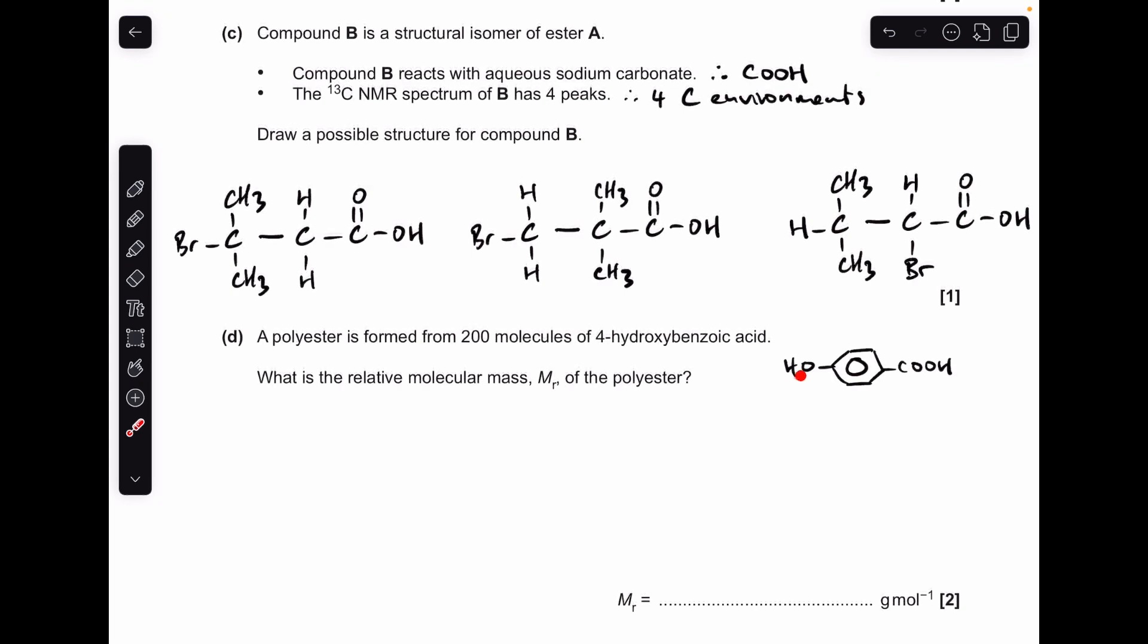Moving on to part D, I've just drawn up the structure for 4-hydroxybenzoic acid, just to quickly explain how this polymer is going to form. We're going to take the H off the OH group, and we're going to take the OH off the carboxylic acid group, which means we can then add multiple copies of these to each other. We're told we're going to form a polyester that contains 200 of these. Now the thing to bear in mind is, at the very end and start of the polymer, you'll still have that on, and you'll still have that on.